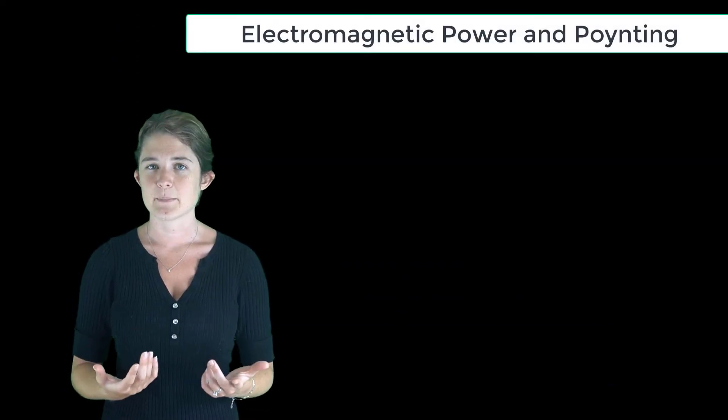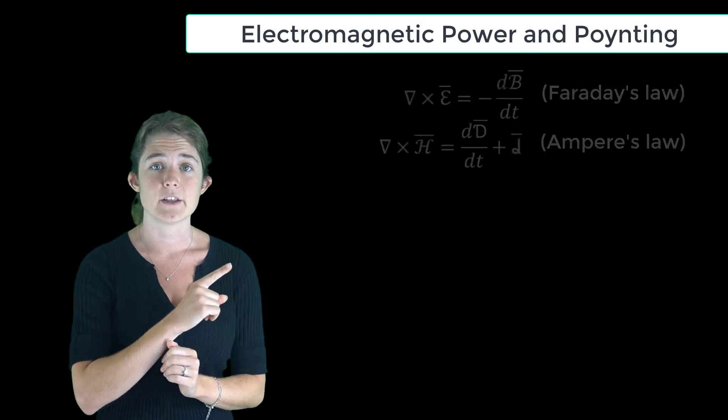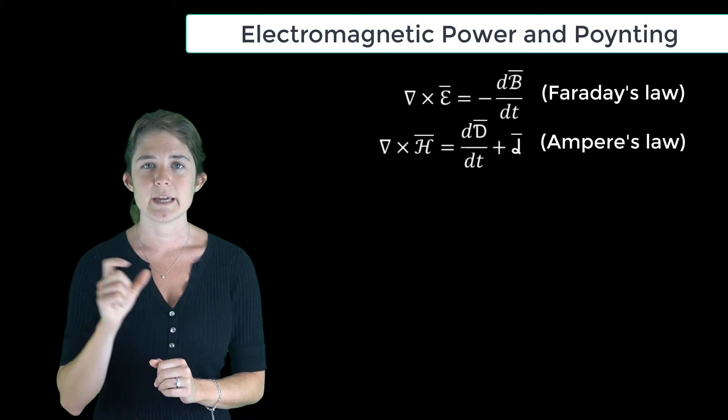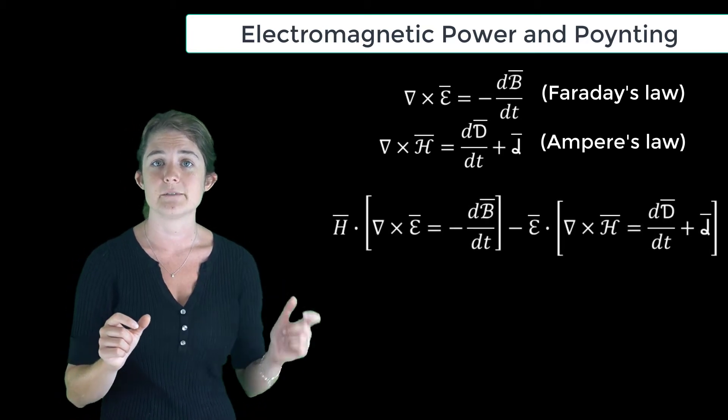Finally, let's take a look at electromagnetic power. Let's take the time domain forms of Faraday's law and Ampere's law. We'll take H dotted with both sides of Faraday's law and subtract E dotted with both sides of Ampere's law.